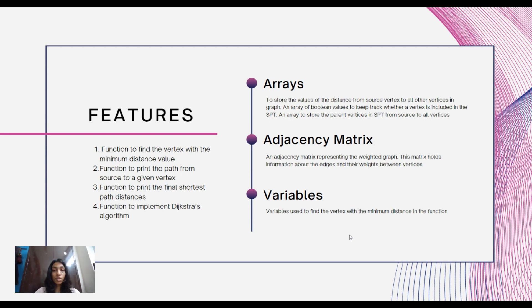We used data structures like arrays to store the distance from the source vertex to all other vertices in the graph. We used an array of boolean values to keep track of whether a vertex is included in the shortest path tree or not, and an array to store the parent vertices in the shortest path from the source vertex to all other vertices. We used an adjacency matrix to hold information about the edges and their weights between vertices, representing the weighted graph.